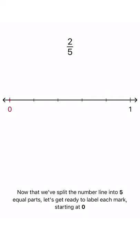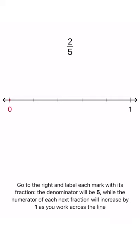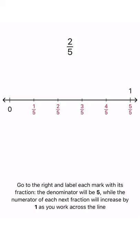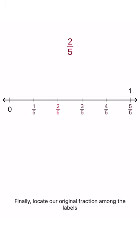Go to the right and label each mark with its fraction. The denominator will be five, while the numerator of each next fraction will increase by one as you work across the line. Finally, locate our original fraction among the labels.